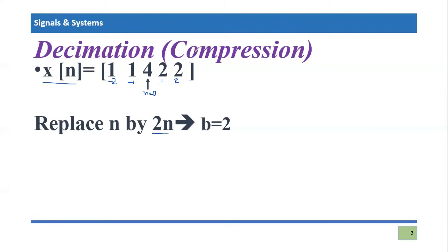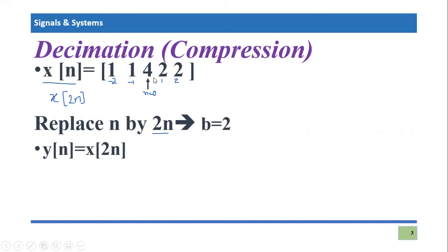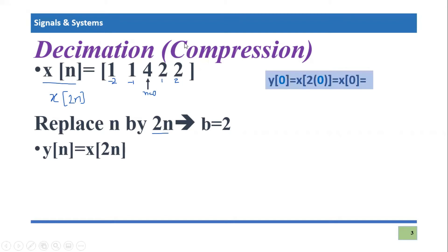So the original signal x(n) becomes x(2n). The resultant signal y(n) is x(2n), the compressed version of the signal. Let's check the values of y(n) for different values of n. For y(0): two times zero equals zero, so y(0) = x(0). We know x(0) equals four, so y(0) is also four.